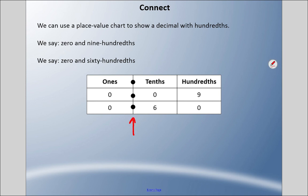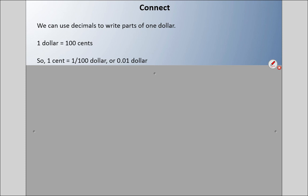We can use decimals to write parts of a dollar. One dollar equals 100 cents, and one cent equals one-hundredth of a dollar, or 0.01 in decimal form. Interestingly, the word cent comes from Latin. We can go to French, which means 100, so in a way we're saying 100, and there's 100 cents in a dollar, so it makes sense.